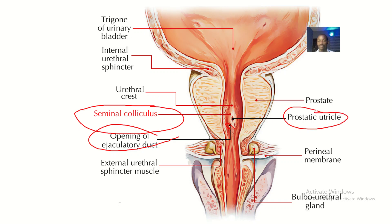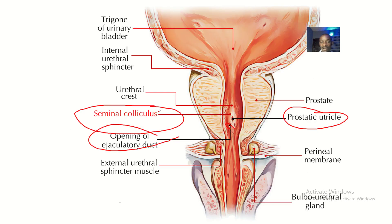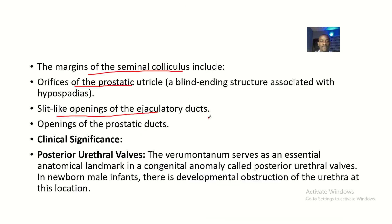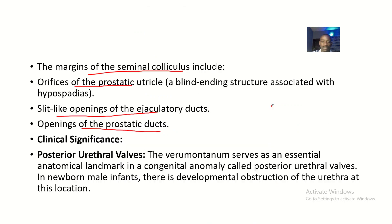The seminal colliculus shows openings of the ejaculatory ducts and openings of the prostatic utricle. The margins of the seminal colliculus include orifices of the prostatic utricle, slit-like openings of the ejaculatory ducts, and openings of the prostatic ducts. Prostatic ducts are the channels through which seminal fluid produced in the prostate reaches the urethra.